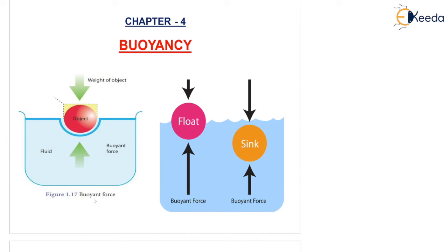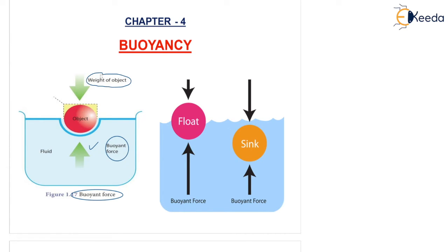As you can see on figure 1.17, buoyant force is mentioned. Whenever a body or an object is floating on the water, two forces are acting: one is buoyant force which is always in the vertically upward direction, and weight of the body which is always vertically downward, that is toward the center of the earth.